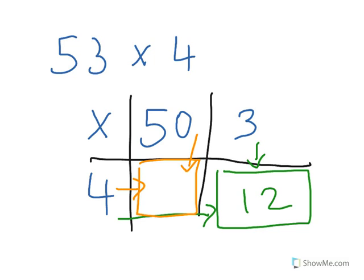Next we look at the orange box and see it's 50 times 4. Again the same rule applies - double and double again. 50 doubled is 100, and double 100 is 200.